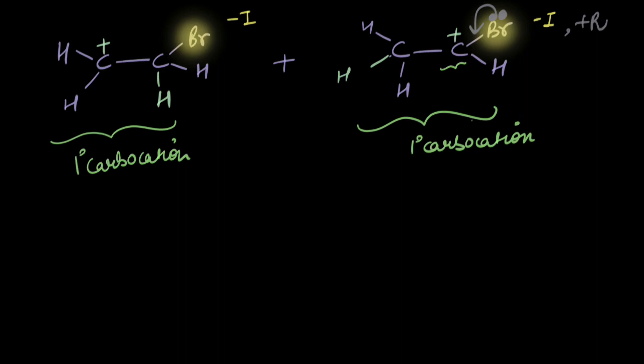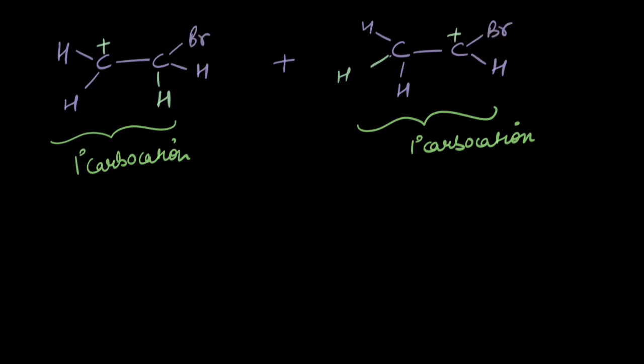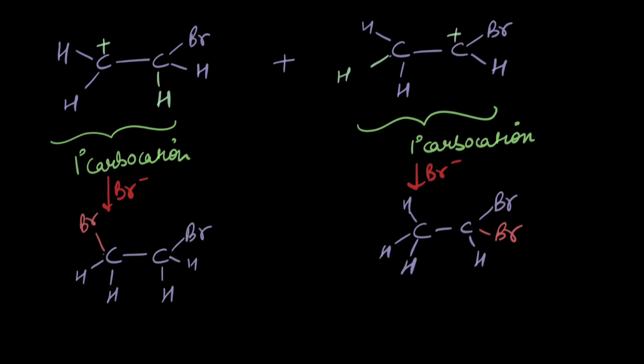It shows the minus i effect in either case. It has this tendency to withdraw electron density via sigma bonds in either case. But in the right carbocation there is a possibility of resonance. So it stabilizes this carbocation via resonance and therefore when Br- attacks these carbocations we get these products. And which one is the major product? This one. This is major.